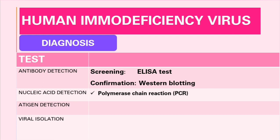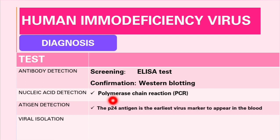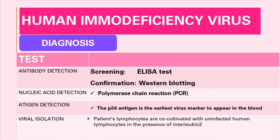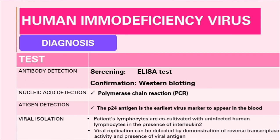For antigen detection, the p24 antigen is the earliest viral antigen to appear in blood. It can be detected directly, and since the body makes antibodies against it, those antibodies can also be detected using ELISA. Viral isolation, which is not widely used, involves co-cultivating the patient's lymphocytes with uninfected human lymphocytes in the presence of interleukin-2. Viral replication is then detected by demonstration of reverse transcriptase activity and presence of viral antigen.